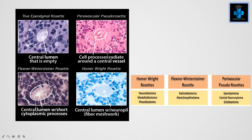The fourth is the Homer-Wright rosette. In this, the central lumen is seen with a neuropil-like fibre meshwork. Examples of Homer-Wright rosettes include neuroblastoma, medulloblastoma, and also pineoblastoma.